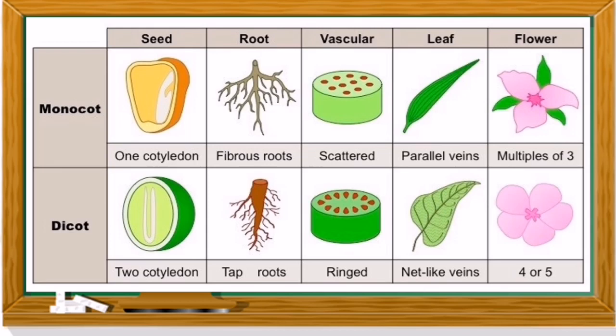In dicot, there are two cotyledons, taproot, ring-arranged vascular bundles, net-like veins, and flower parts in multiples of four or five petals.